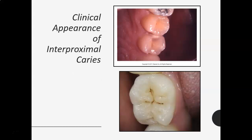Looking at the clinical appearance of interproximal caries — in between these two premolars you can see it's very shadowy right here on the distal of this premolar, kind of dark. You can see that with your eyes. Occlusal surfaces can show dark staining in the fissures and pits, or can appear chalky, but the interproximal part shows up as a shadowy, dark area on the radiograph.